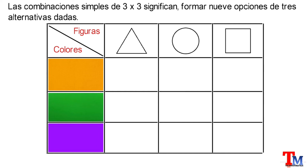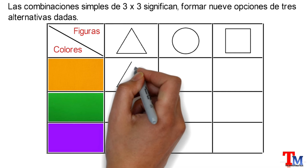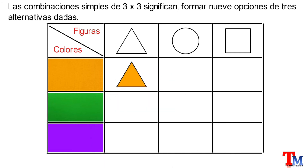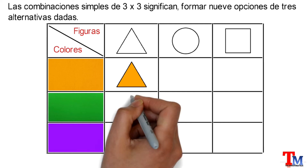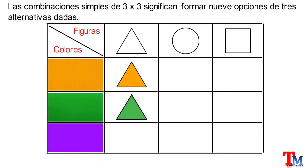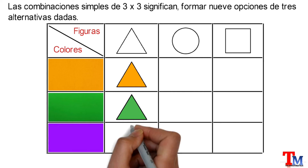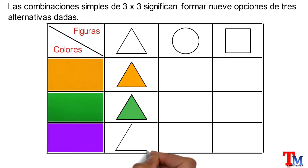Luego, combinando el color amarillo con el triángulo obtenemos... Combinando el color verde con el triángulo obtenemos... Y combinando el color morado con el triángulo obtenemos...